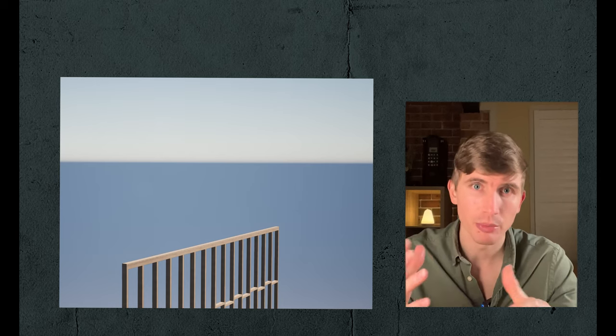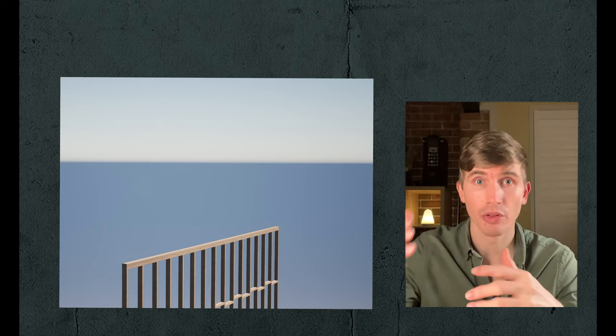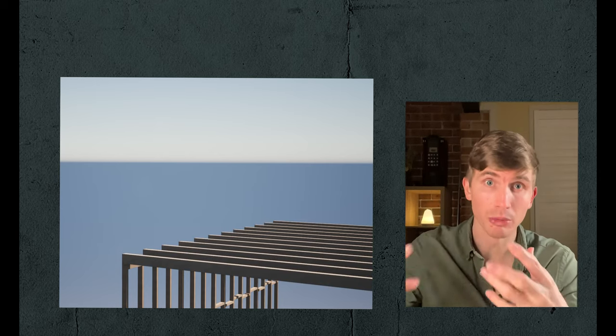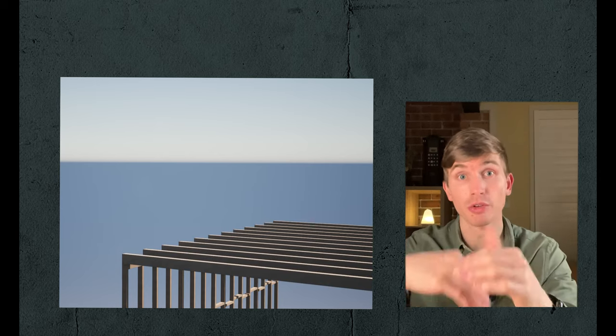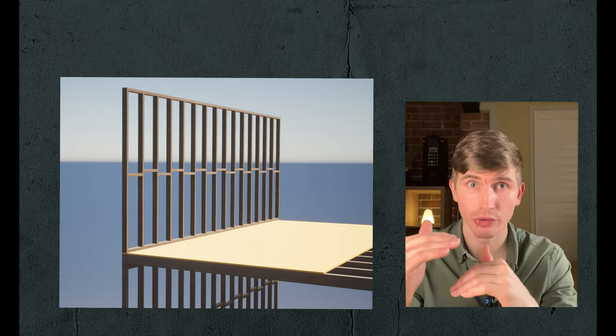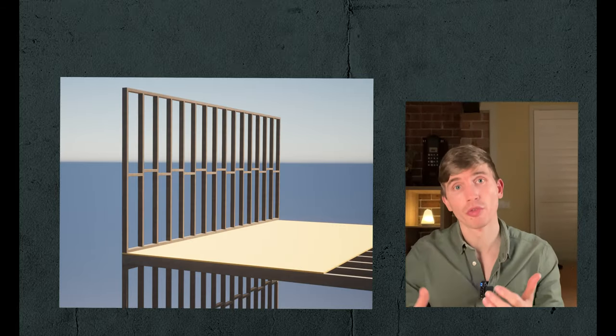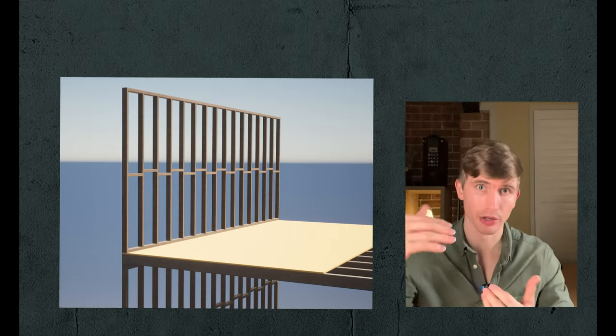Continuing on up higher, upper floors are pretty much built like the ground floor. Joists sit on the top plate of the wall below, subfloor covers those joists, and the next wall frame sits directly on top.